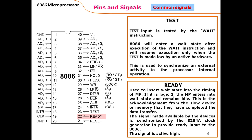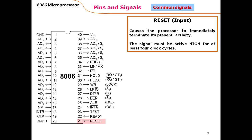The READY pin is an input used to insert wait states into the timing of the microprocessor. If it is logic one, the microprocessor enters a wait state and remains idle. This is the acknowledgement from slow devices or memory that they have completed data transfer. The signal made available by the device is synchronized by the 8284A clock generator to provide the READY input to the 8086 microprocessor. This signal is active high, meaning a wait state is inserted when logic one is received.